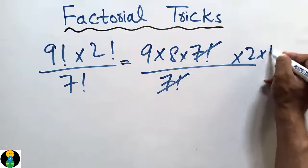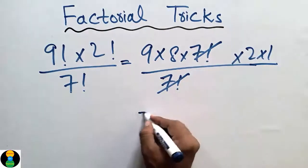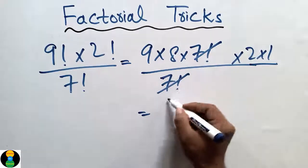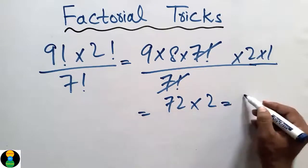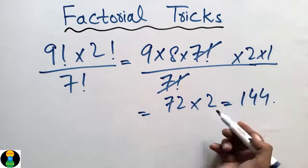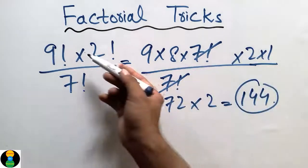So 9 into 8 into 7 factorial, into 2 into 1. 7 factorial cancels. It comes out to be 72 × 2 = 144. In this way we can solve this problem in just two steps.